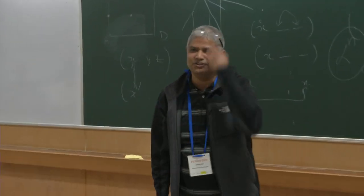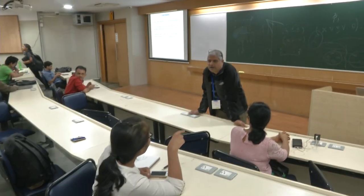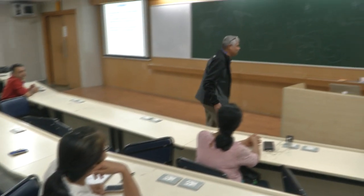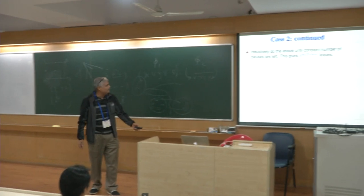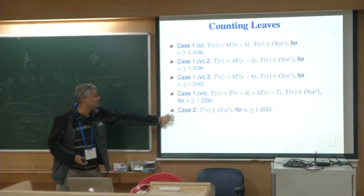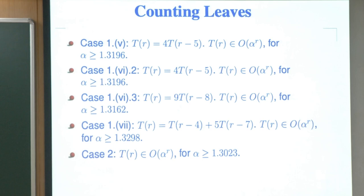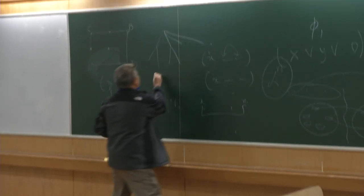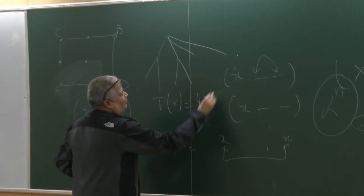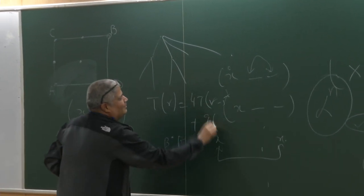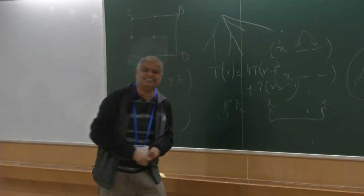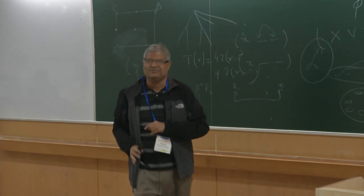Question: Is there a closed form for α? In the cases we analyzed, particularly the last one, we derived recurrences of the form T(n) = something, and then simply checked which α satisfies them — there is no closed form beyond that.